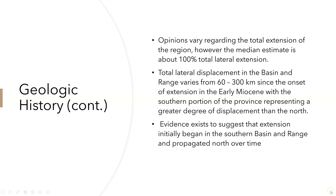Opinions vary on total extension, but the median estimate is about 100% total lateral extension. Total lateral displacement in the Basin and Range varies from 60 to 300 kilometers since the onset of extension in the early Miocene, with the southern portion representing a greater degree of displacement than the north. Evidence suggests extension initially began in the southern Basin and Range and propagated north over time.